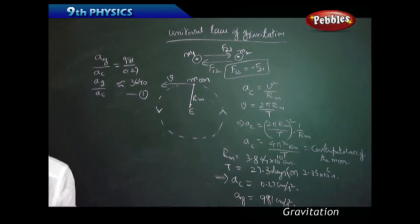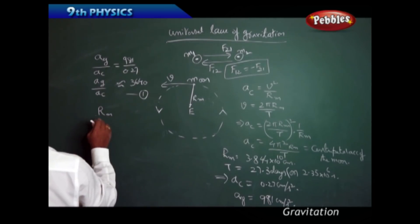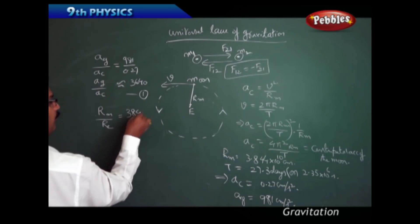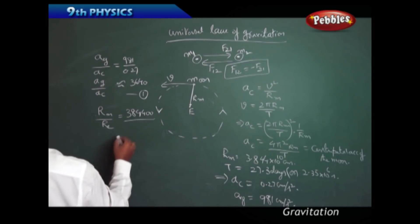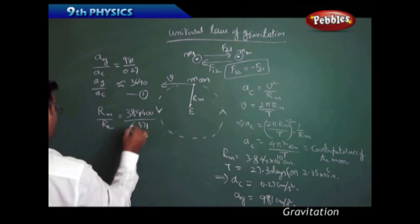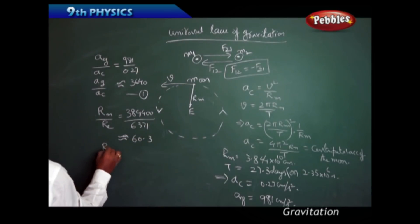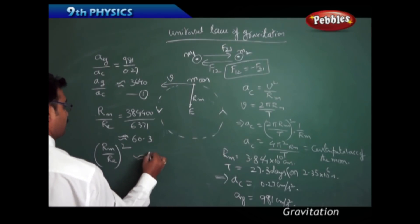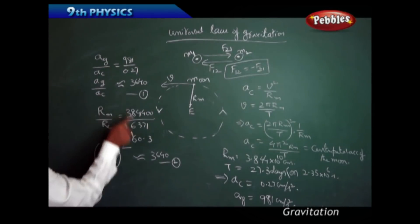Next, the ratio of the radius of the moon's circular path to the radius of the earth: r_m / r_e = 384,400 km / 6371 km ≈ 60.3. Now if you square it, (r_m / r_e)² ≈ 3640.